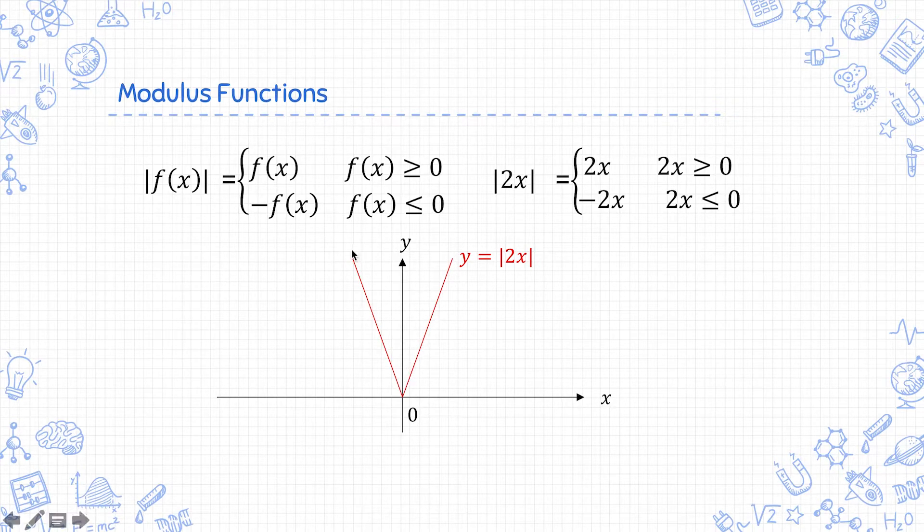Whereas at this part, these values of x, 2x is negative. So this part of the graph actually follows the equation y equals negative 2x.